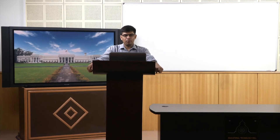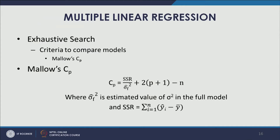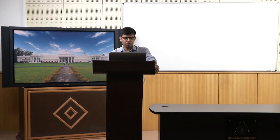Another criterion to compare models in exhaustive search is Mallow's CP. Mallow's CP can be expressed as: CP = SSR divided by sigma-hat-squared of the full model, then plus 2(P+1) minus N. Here sigma-hat-squared for the full model is the estimated value of sigma-squared in the full model, and SSR is the sum of (Ŷ minus Ȳ) squared — the sum of squares for regression. Mallow's CP can be used to compare models, which we will discuss further.